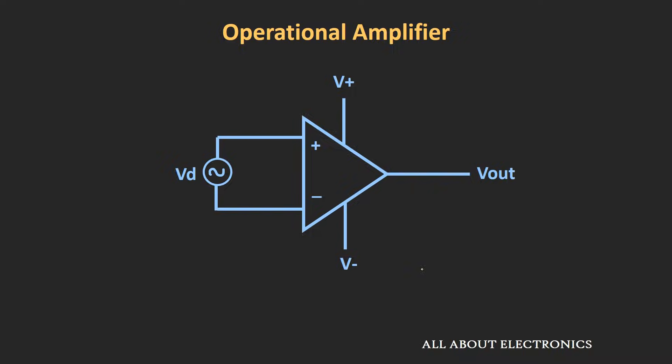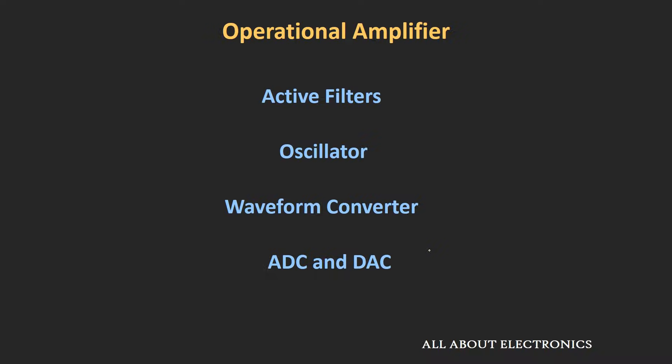Whenever this operational amplifier is used in open loop configuration — meaning there is no feedback from output to input — even a small input signal will cause the output to saturate towards the positive or negative biasing voltages. This characteristic is particularly useful when we use this op-amp as a comparator. The op-amp can also be used in many other applications like designing active filters, oscillators, waveform converters, and analog-to-digital and digital-to-analog converters. Basically, this op-amp is a very versatile IC.